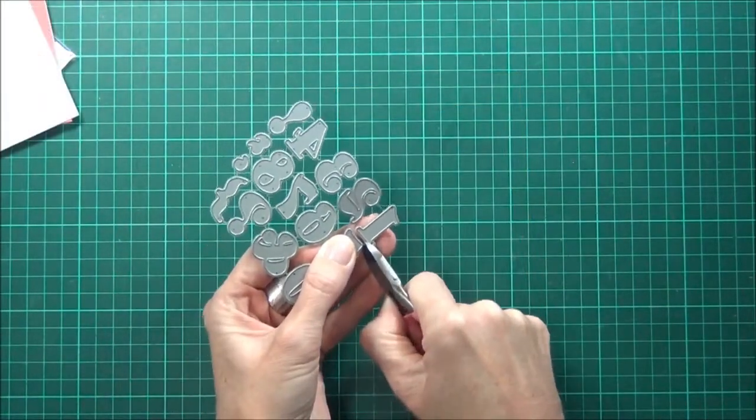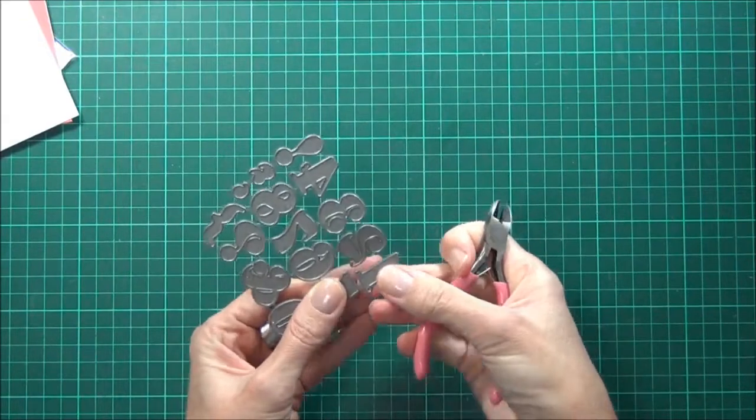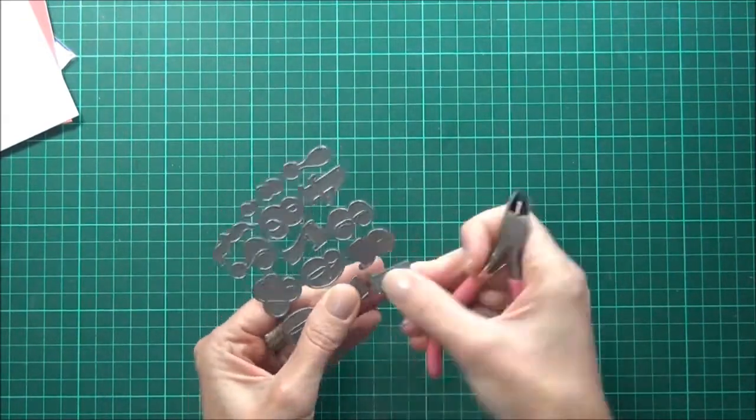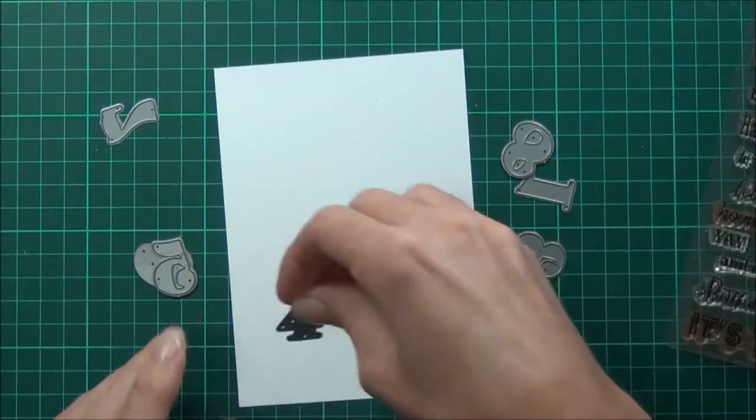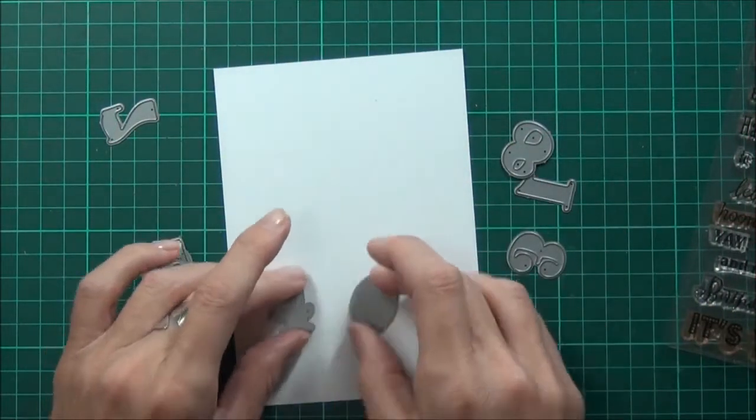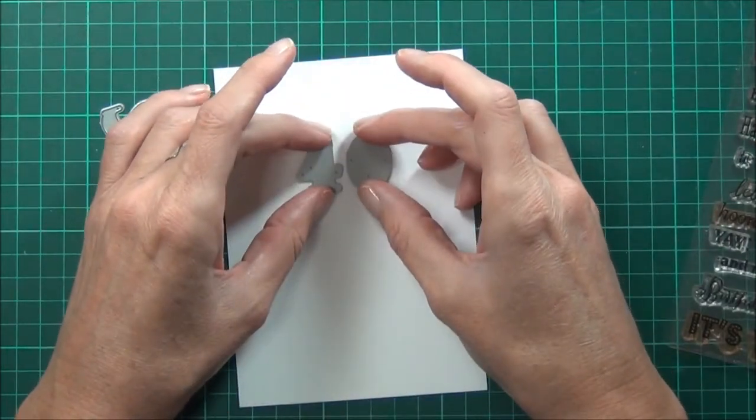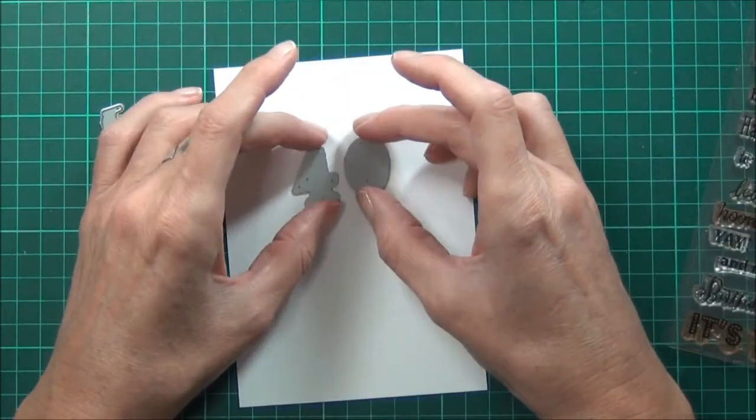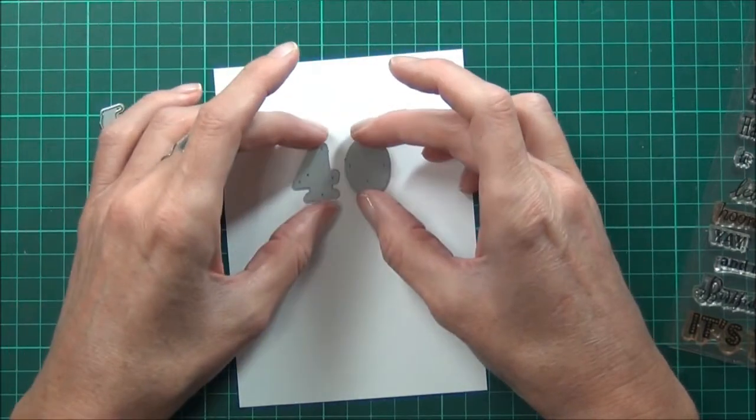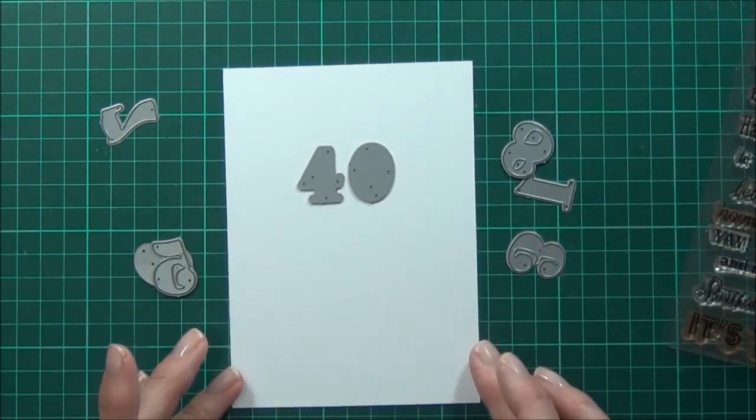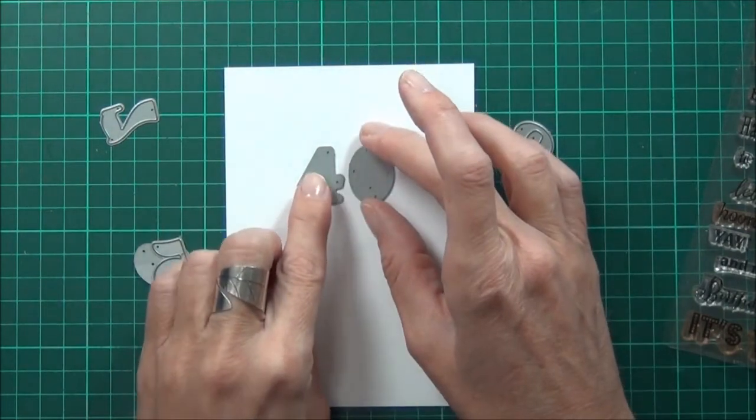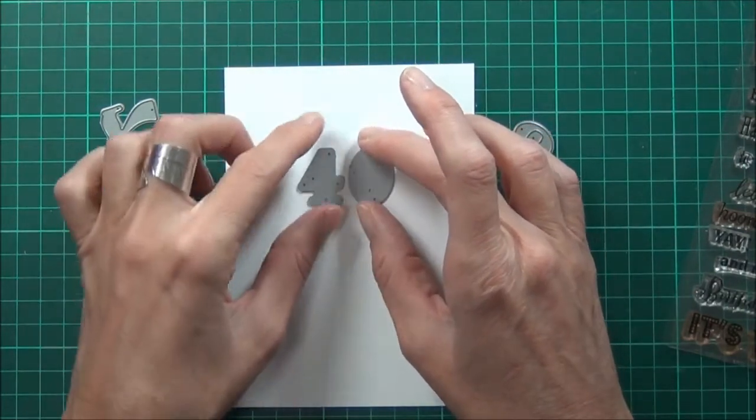Because this is a new die, all the numbers are still joined, so I'll just quickly separate those. So this is going to be a 40th card and I'll just pop that nice and straight up in the center.